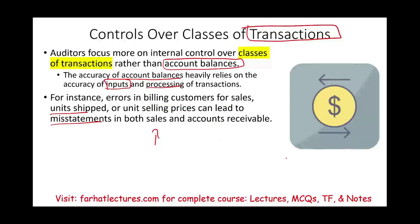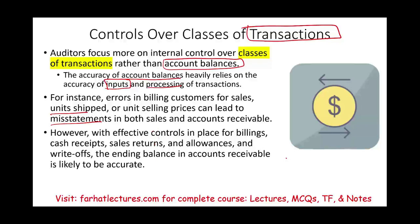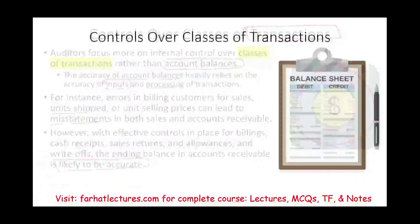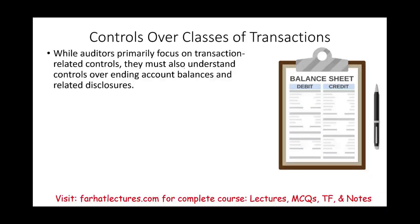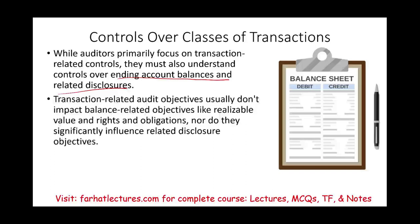For example, errors in billing customers for sales — units shipped or unit selling prices — can lead to misstatements in both sales and accounts receivable. You don't just look at the sales and accounts receivable balances; you want to see what's being inputted into these accounts. If what's being inputted is proper, the balance should be proper. However, the auditor must also understand controls over ending account balances and related disclosures — transaction-related audit objectives don't always impact balance-related objectives like realizable value, rights and obligations, or disclosure objectives.